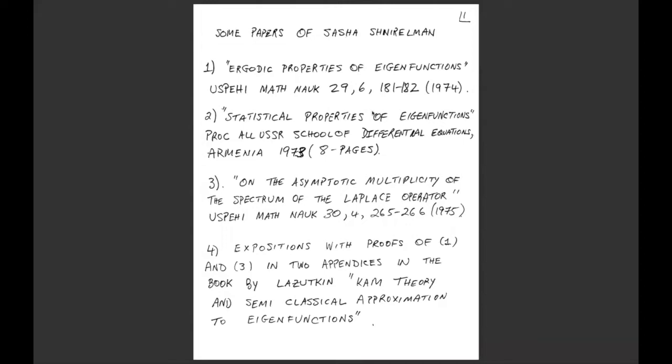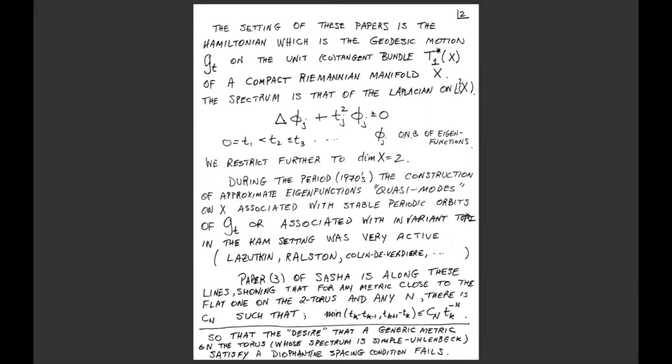The papers of Schnirelman I want to talk about are from 1974, a two-page paper titled Ergodic Properties of Eigenfunctions. There's a second paper called Statistical Properties of Eigenfunctions, an eight-page paper with more details. Very few people had seen that paper until much more recently.